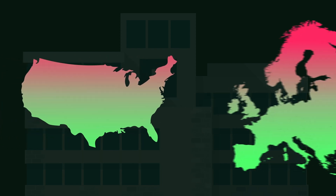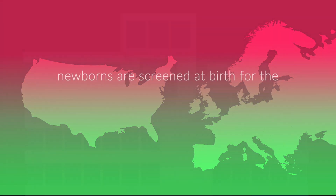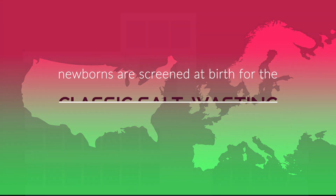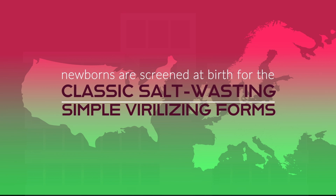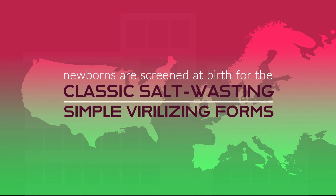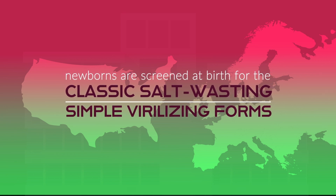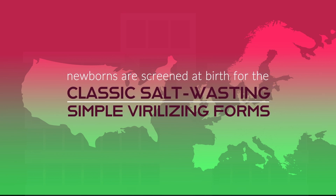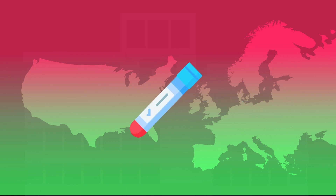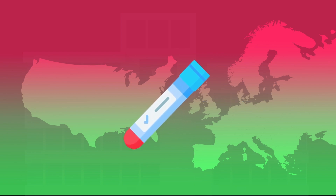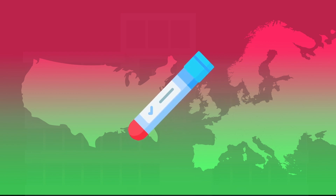In the United States and Europe, newborns are screened at birth for the classic salt-wasting and simple virilizing forms of CAH. For those who test positive, additional biochemical and genetic testing is done to confirm the diagnosis.